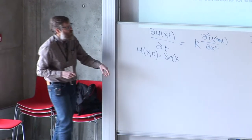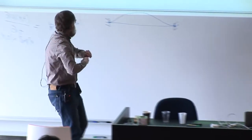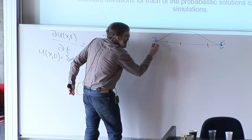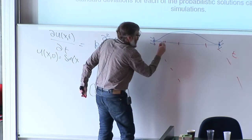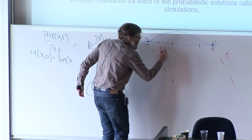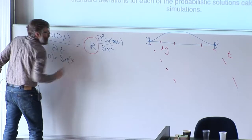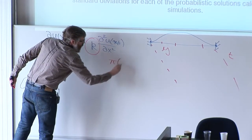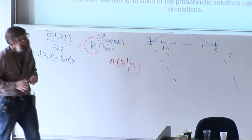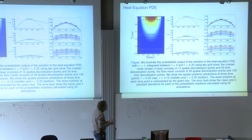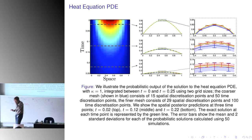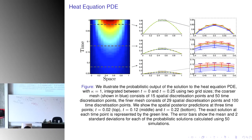Then we'll look at the inverse problem where we observe some data — measurements along a grid across time. Those measurements have some observation error. From those measurements y, we want to obtain a posterior distribution over kappa, which we don't know. The reason we use this example is because there is an exact analytic solution, so we have the ground truth to do a comparison with.